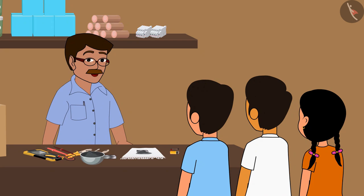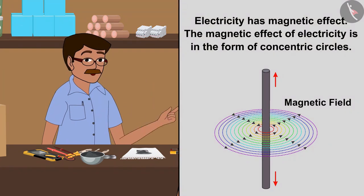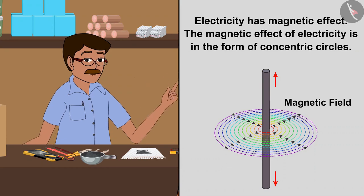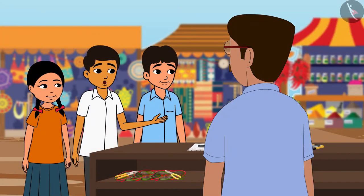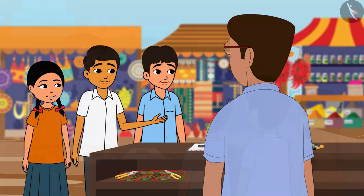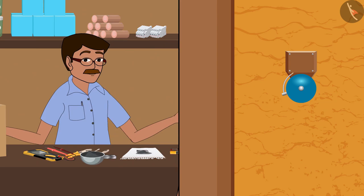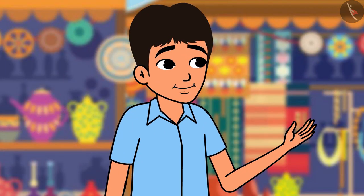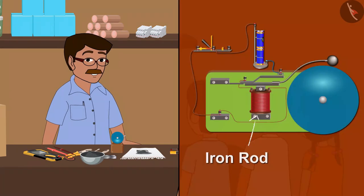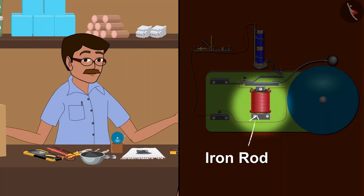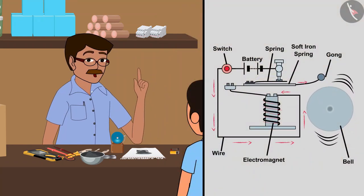Yes, you are right. This happened because electricity has a magnetic effect. The magnetic effect of electricity is in the form of concentric circles. Does that mean that electricity has a magnetic effect like an actual magnet? Yes, you are right. The electrical bell works on this principle. See, I have an old electric bell here. Can you see this small iron rod? This works like the magnet. When electricity is passed through the coil wound around it, the gong goes and rings the bell.